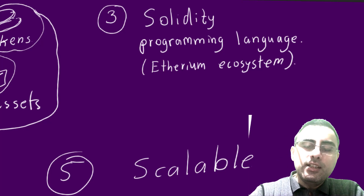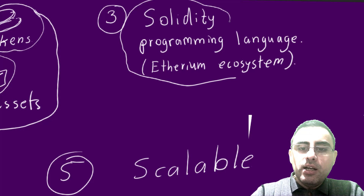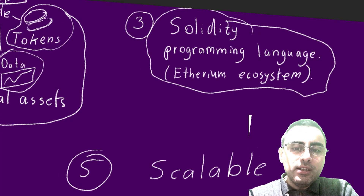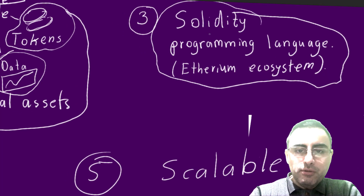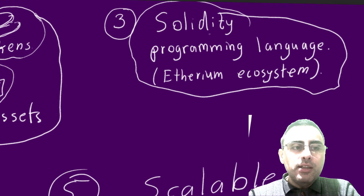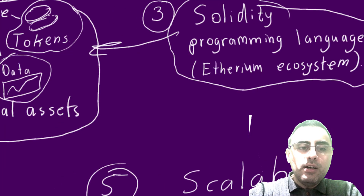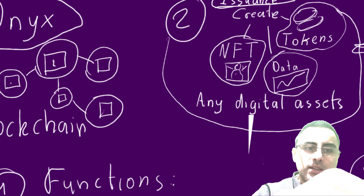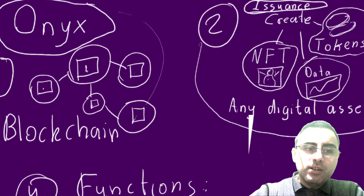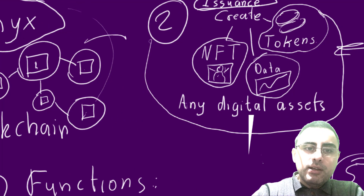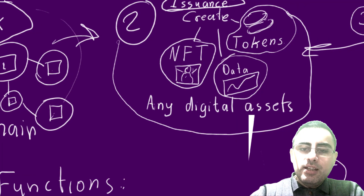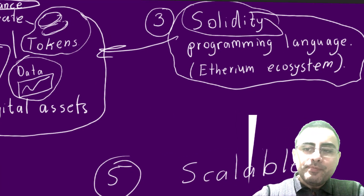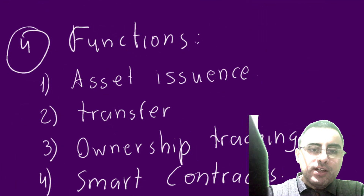You can do this with Solidity. Solidity is a programming language which is very popular in the Ethereum ecosystem. If you want to create any important asset, you should learn or use Solidity. If you know Solidity, you can create tokens or anything on Onyx. So this is blockchain technology called Onyx, based on the Ethereum network.